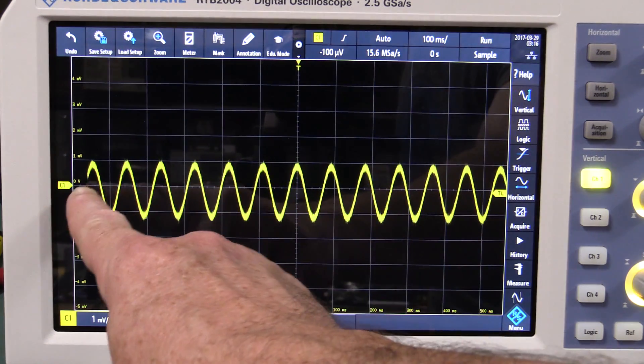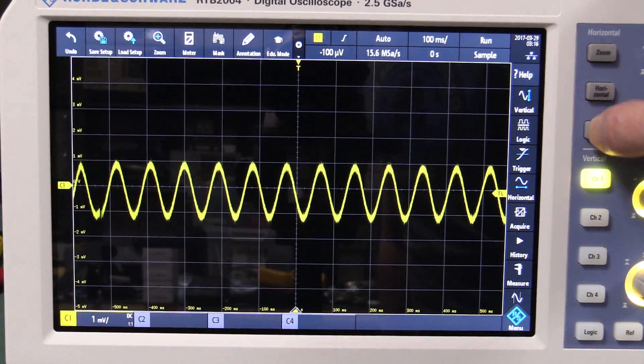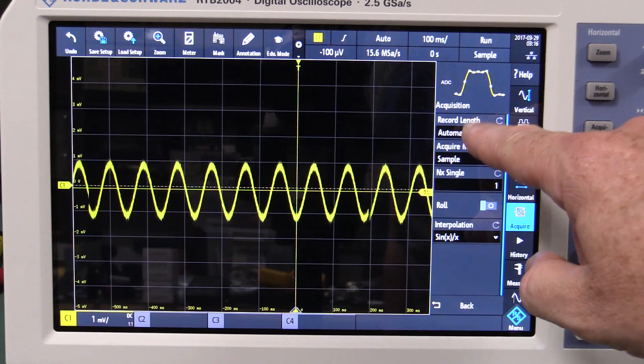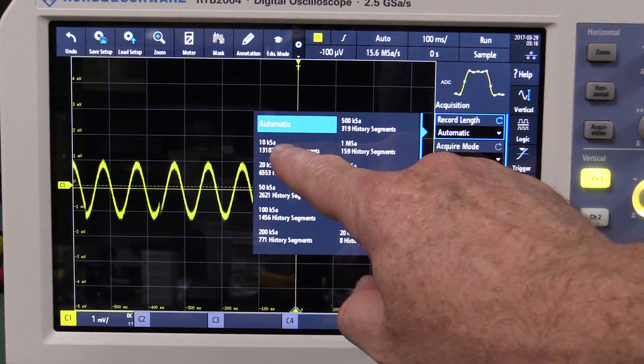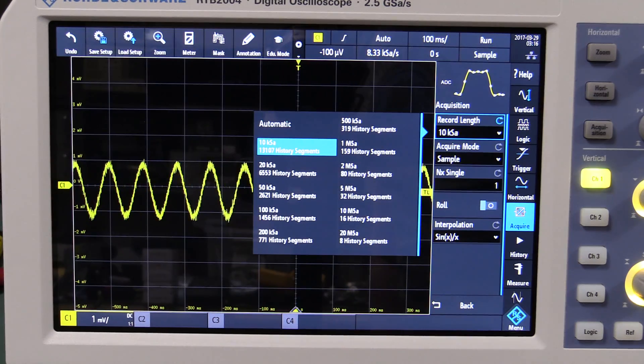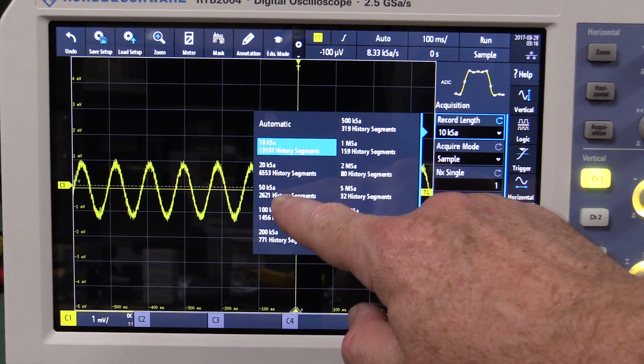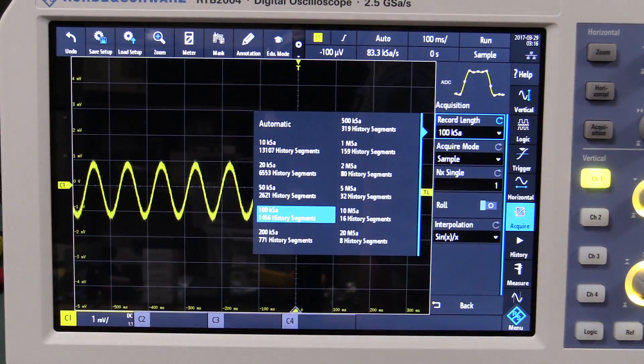Anyway, so you set it on auto and it's doing it okay. You can see it's still got that sort of acquisition glitch I'll call it, but you don't get that down at the low memory depths. I haven't tried them all but I've jumped up a few. Go up to 100k, whoop.